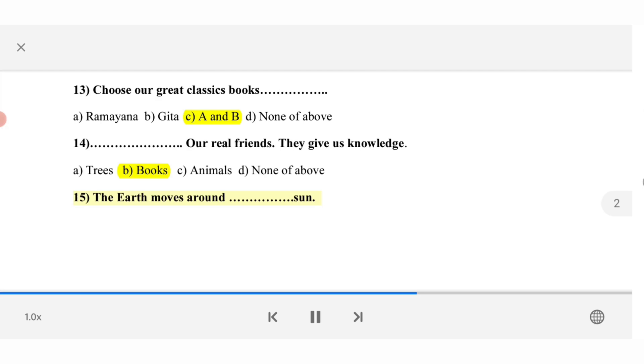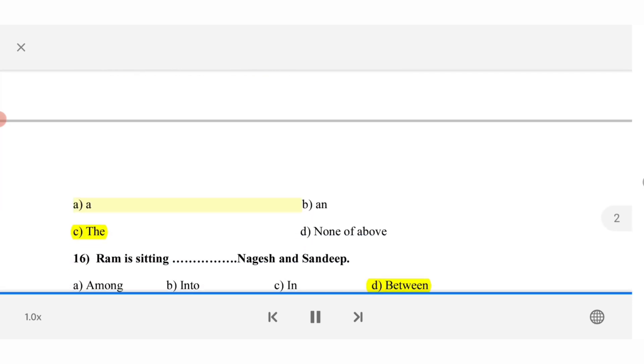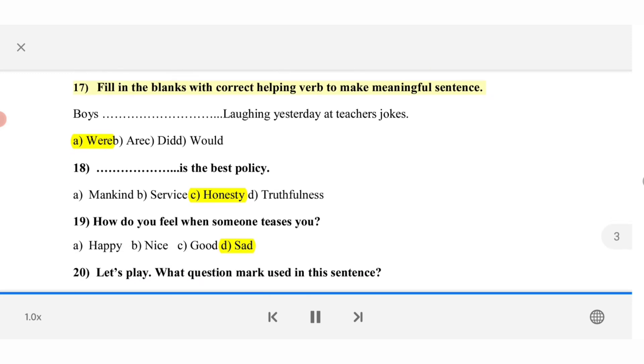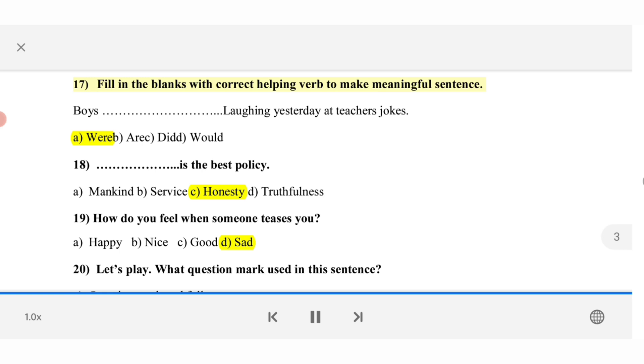15. The earth moves around sun. A. A. B. An. C. The. D. None of above. 16. Ram is sitting Nagesh and Sandeep. A. Among. B. Into. C. In. D. Between. 17. Fill in the blanks with correct helping verb to make meaningful sentence. Boys laughing yesterday at teacher's jokes. A. Were/are/would.